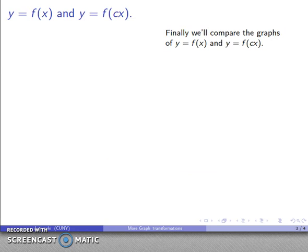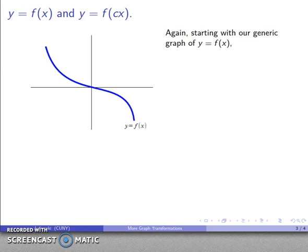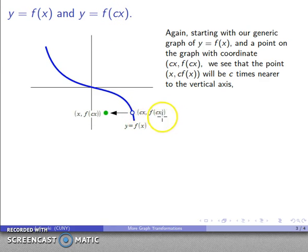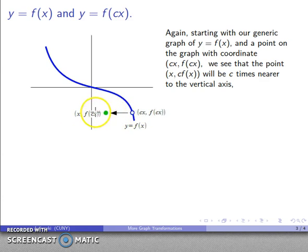Now let's compare y equals f of x and y equals f of cx. Again, I have a generic graph and a point on it. For a point on the graph of y equals f of cx, the coordinates are x and f of cx. The y-coordinate is the same function value, but the horizontal coordinate — originally cx — becomes just x, meaning the point moves c times nearer to the vertical axis.